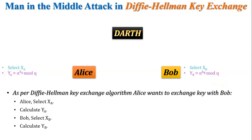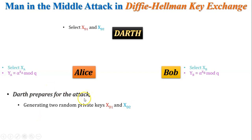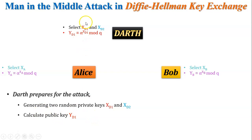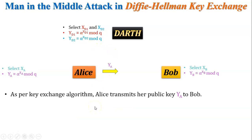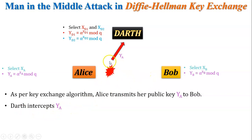Now Darth prepares for the attack. Darth generates two random private keys: x_d1 and x_d2. From these, Darth calculates two public keys: y_d1 from x_d1, and y_d2 from x_d2. As per the key exchange algorithm, Alice transmits her public key y_a to Bob. Before Bob can receive it, Darth intercepts y_a and destroys the original message — so y_a, Alice's public key, is now captured by Darth.